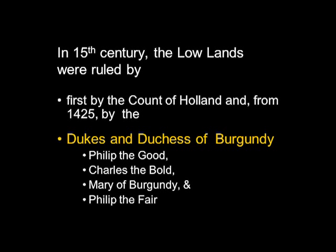In the 15th century, the Lowlands were ruled first by the Count of Holland, who at that time was John of Bavaria. John of Bavaria died in January of 1425 and had no male heir. Who probably should have inherited the territory was his niece — the daughter of the previous count, his brother. But she had been a minor when he died, so the brother took over and set himself up as the count.